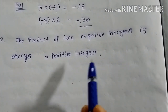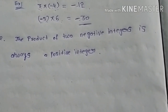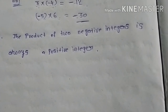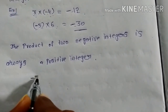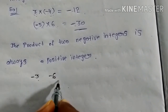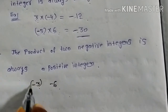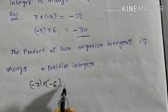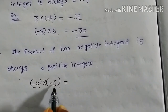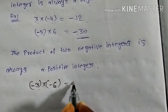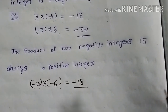The product of two negative integers is always a positive integer. I am taking minus 3 and minus 6. These two numbers are negative integers. I am doing multiplication: minus 3 into minus 6. See, minus into minus gives plus. 3 times 6 is 18, so your answer is plus 18.